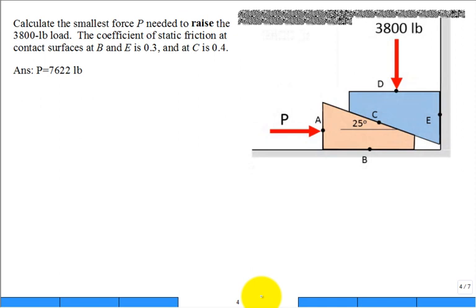Calculate the smallest force P needed to raise the 3,800 pound load. Let's take a look at what we have. We have a wedge that I'll call the top wedge and then we have a bottom wedge - two wedges.